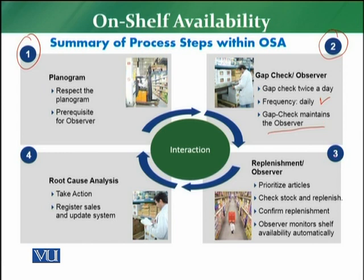The third component is replenishment. First, you have to replenish prioritized articles. Prioritized articles include A, B, and C articles, core assortment articles, and promotional articles — all of these should be replenished as per priority. Then you have to check the stock, confirm the replenishment, and use Observer, which monitors shelf availability automatically.